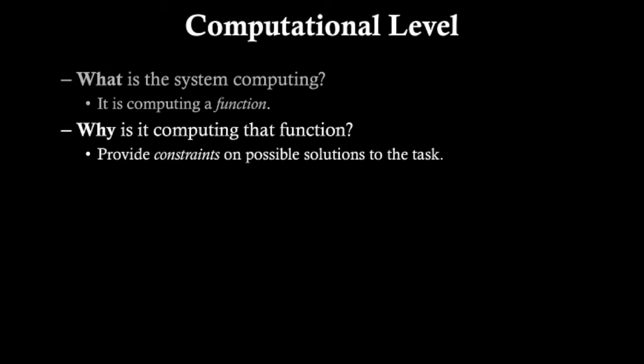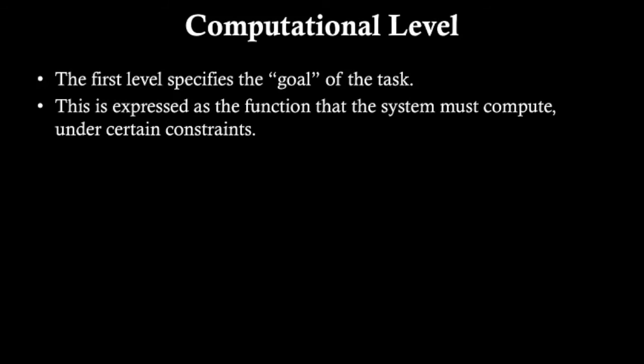We know that the system is computing a function, but the question is, why is it computing that function, as opposed to other functions? What are the constraints on the possible solutions of the task? The first level exemplifies the goal of the task, the computational level, and this is expressed as a function that the system must compute under certain constraints.